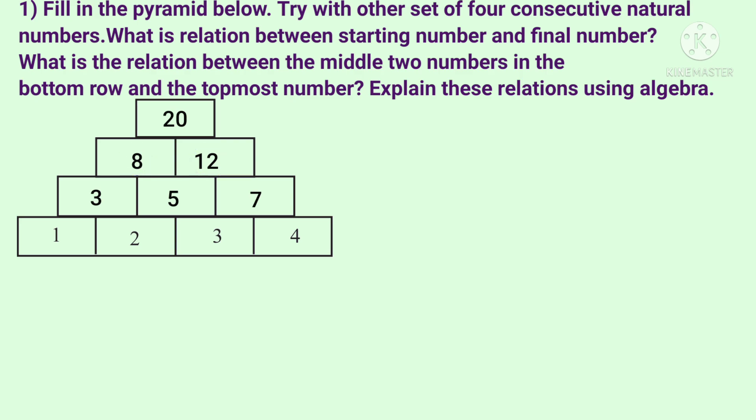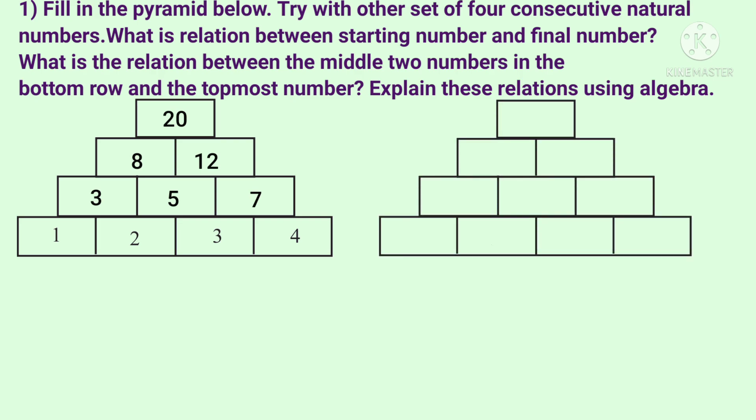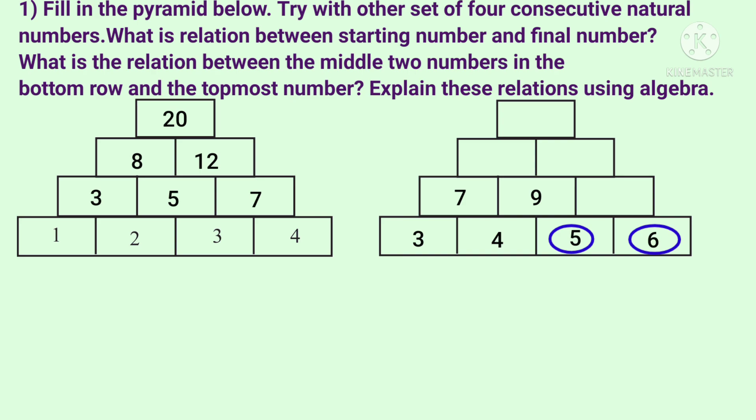We have 4 consecutive numbers in the bottom row. I am going to write 3, 4, 5, 6. If you have 4 numbers in the bottom row, I will write 4 consecutive numbers. 3 plus 4 is 7, so 7 goes here. 4 plus 5 is 9, so 9 goes here. 5 plus 6 is 11, so 11 goes here.